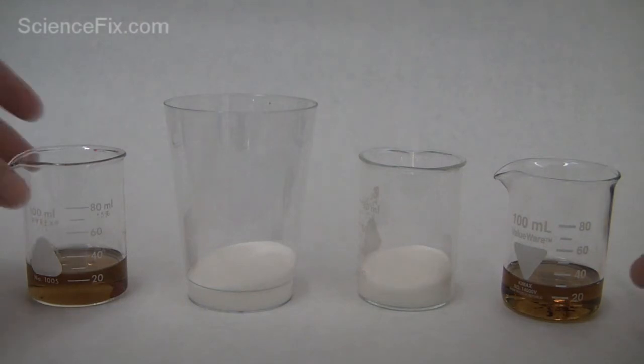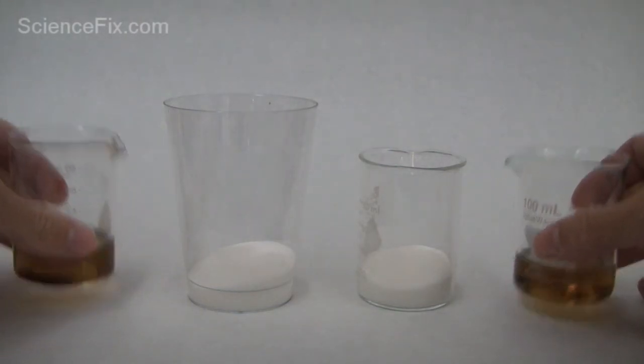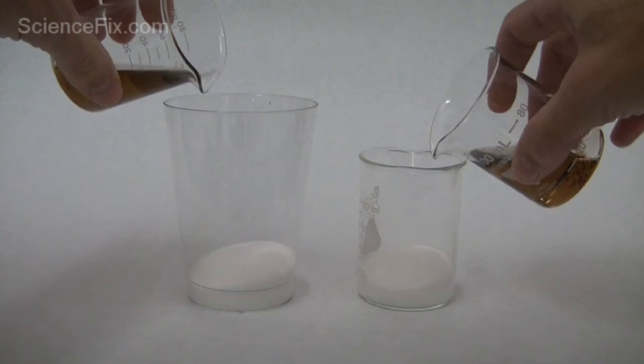The two outside beakers contain sulfuric acid. The sulfuric acid is going to be poured into both containers of sugar, sucrose.